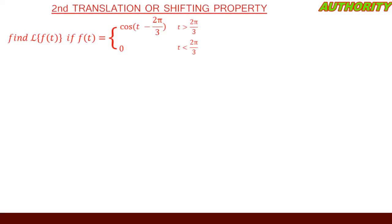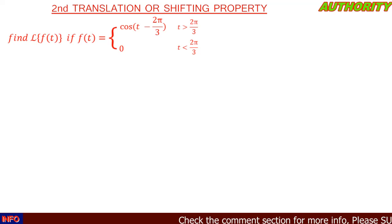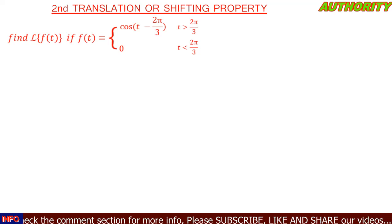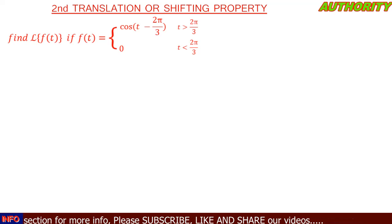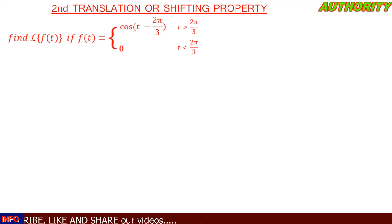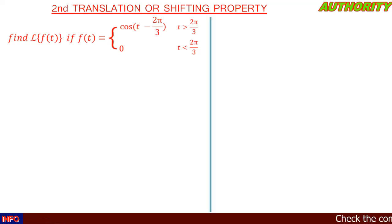Welcome. Today let's consider this question on the Laplace transform. Find the Laplace transform of f(t), where f(t) equals cos(t - 2π/3) when t is greater than 2π/3, or f(t) equals zero when t is less than 2π/3.